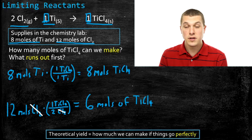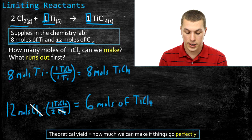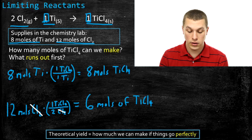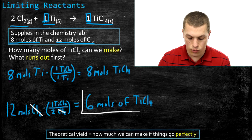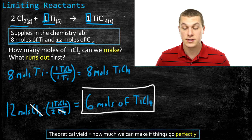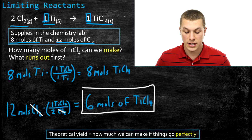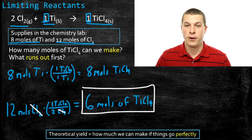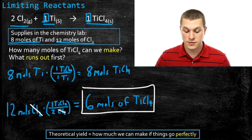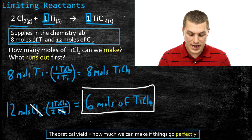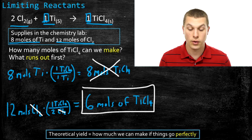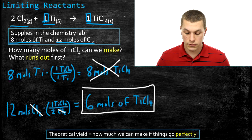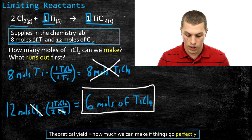Now I've done all the math. Chlorine produces fewer moles of product — 6 versus 8 — so that's the quantity actually made. I'll never reach 8 moles of titanium chloride even though I have enough titanium, because the chlorine runs out first and production stops. My theoretical yield is 6 moles of titanium chloride. The 8 moles never occurs because there isn't enough chlorine. Therefore, chlorine (Cl₂) is our limiting reactant.